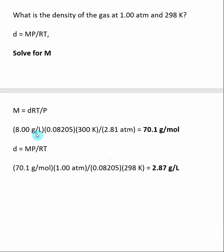Density was given in grams per liter. R is a constant and here we want to use the 0.08205 version. Temperature we converted to K and pressure was given as 2.81 atm. I then get the molar mass of the gas and that is 70.1 gram per mole.